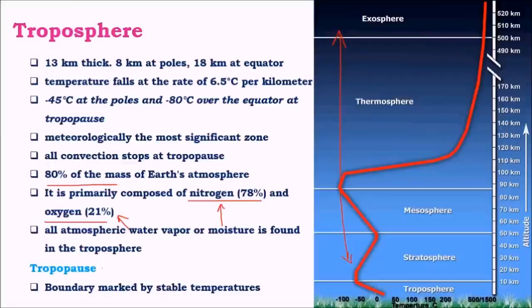The outermost boundary of troposphere is called the tropopause, which separates the stratosphere and troposphere. This is a thin layer where temperature remains constant — at the upper layers of troposphere there is a seasonal lapse rate, and beyond that near the tropopause the temperature remains constant through these distances until it reaches the stratosphere.